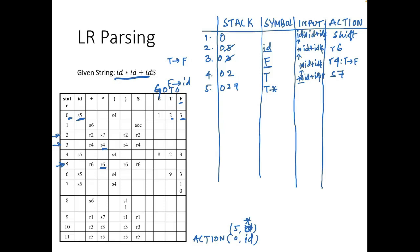What remains in the input is id + id $. Top of the stack is 7 and current input is id. We look up action[7, id] — it is s5, shift to state 5. We push 5 onto the stack. The symbol id is moved to the symbol part, so symbols are T * id. What remains in input is + id $.